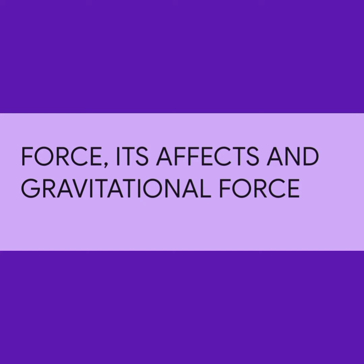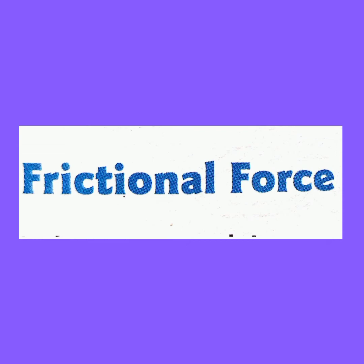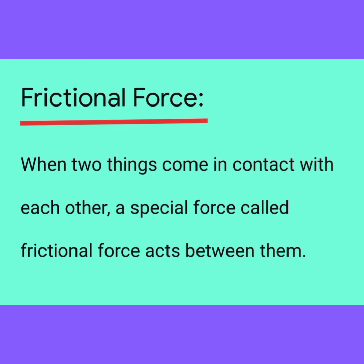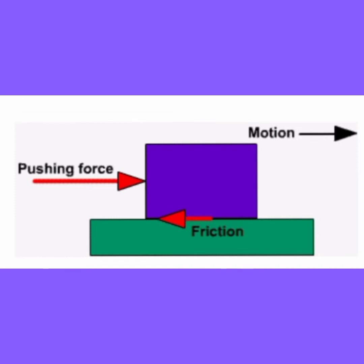Today we will start with frictional force. The question is: how does frictional force work? When two things come in contact with each other, a special force called frictional force acts between them. It is a force which acts when two surfaces come in contact with each other and it opposes the motion of an object, resisting and slowing it down until it finally stops.